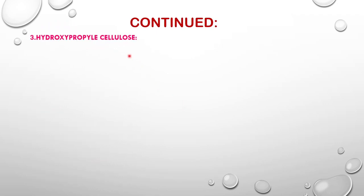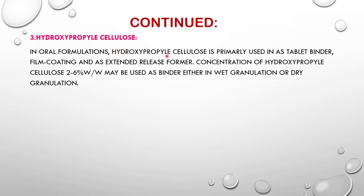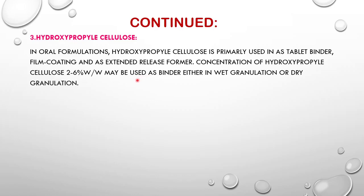Hydroxypropylcellulose is a cellulose used in oral formulations primarily as a tablet binder, film coating, and extended-release former. You will know more about this in higher classes in pharmaceutical chemistry. The concentration of hydroxypropylcellulose at 2-6% weight by weight may be used as a binder either in wet granulation or dry granulation.